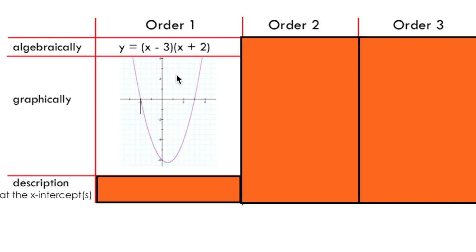Now if I graph this function, you can see that the function passes through the x-axis once at each of these intercepts. That's a key characteristic of x-intercepts of order 1.